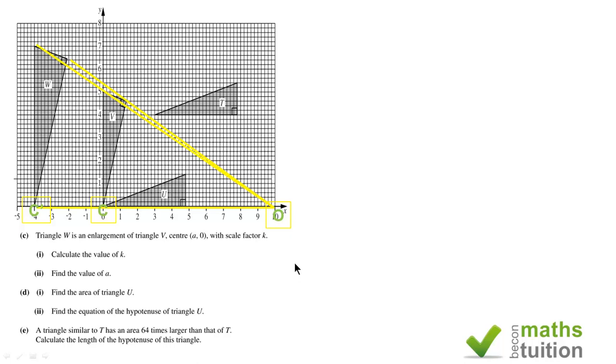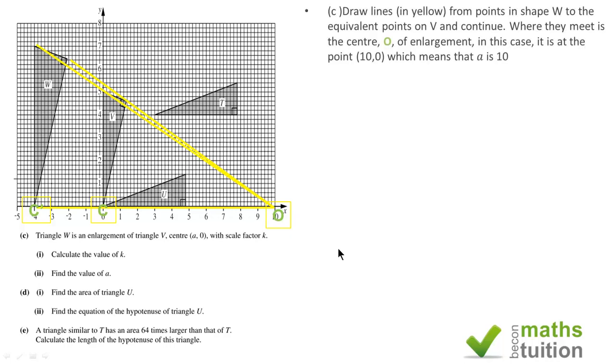What I've done is I've joined the equivalent points for triangle W and triangle V, and those are in yellow. They all meet up at the point O, so O is the center of enlargement. In effect, the point O is 10, 0, so A is 10, as required.